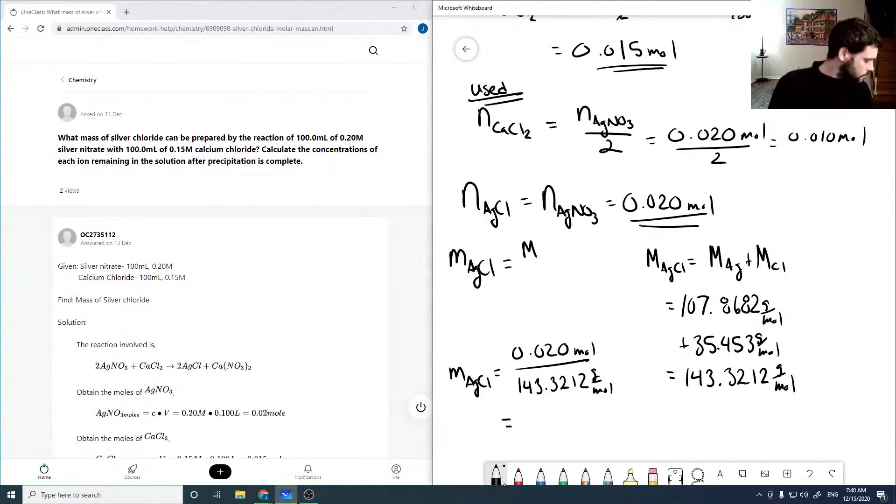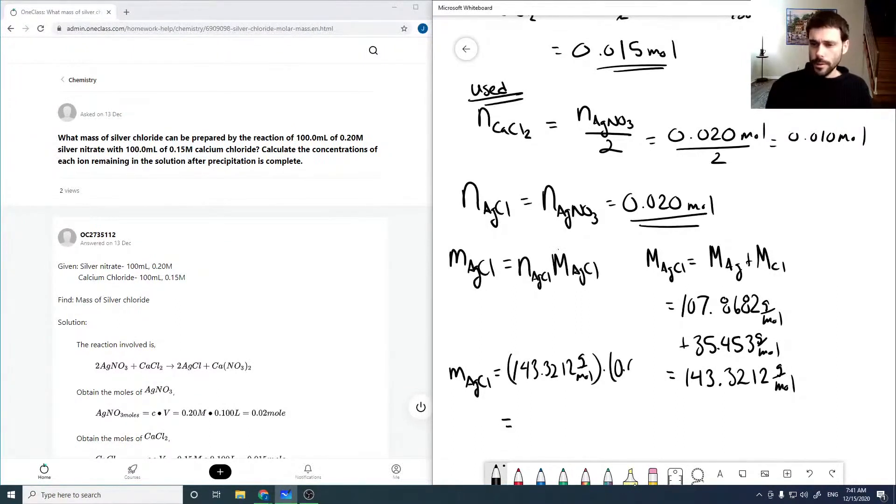The biggest reason to pay attention to the units is if you make a mistake like this, then it easily shows out. It'll be the amount of moles times the molar mass. So it'll be this 143.3212 grams per mole times 0.020 moles. So the moles will cancel, leaving you with grams. Which comes out to be 2.866 grams or 2.9 grams with significant figures.